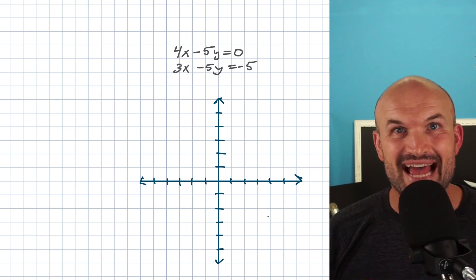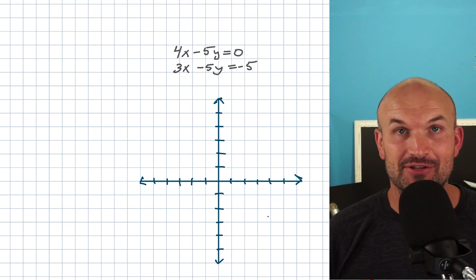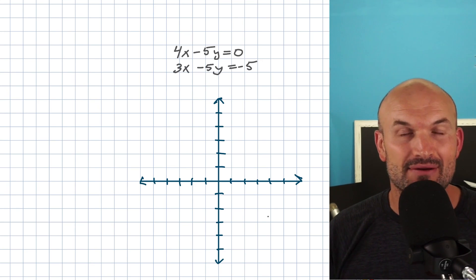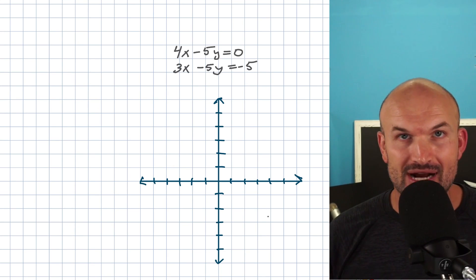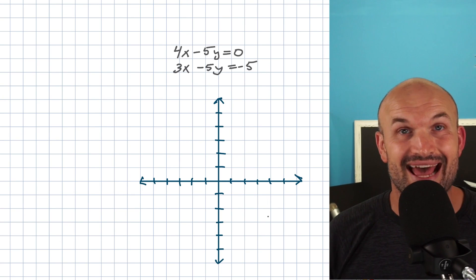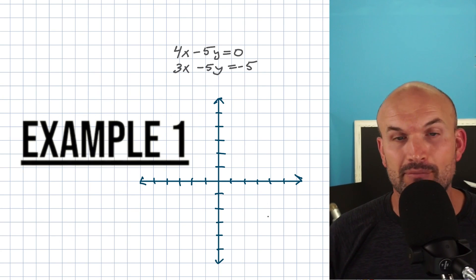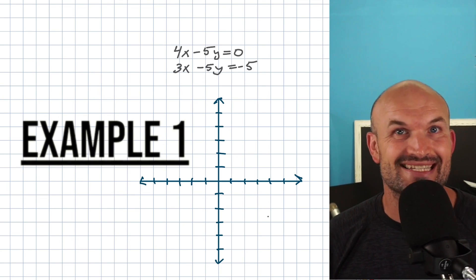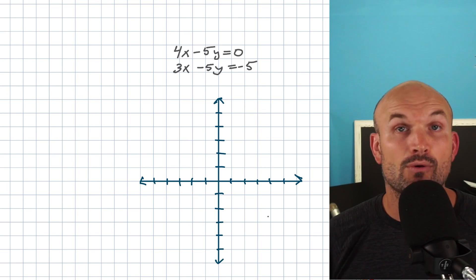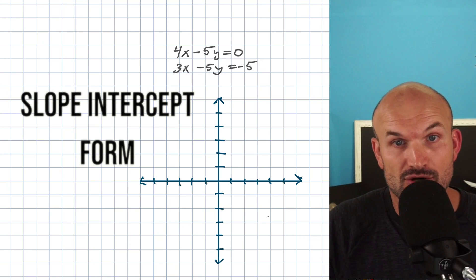What's up, guys? In this video, what I want to do is tackle three difficult problems that you can expect to see when trying to solve a system of equations by graphing. When we're trying to find the solution to a system of equations by graphing, we're going to want to graph the two lines and then use the intersection point. In this first example, I have both of my equations in standard form, and we want to make sure that our two equations are going to be in slope-intercept form.